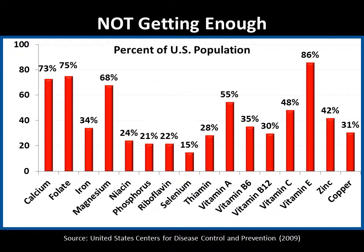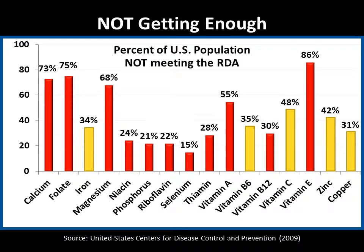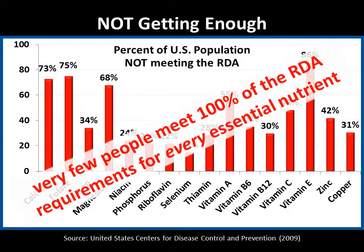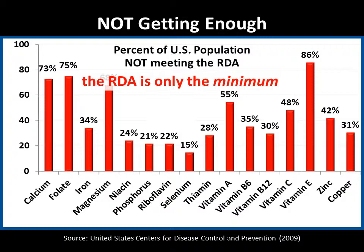This chart shows the percent of the U.S. population not meeting the recommended dietary allowance for 16 essential nutrients. You can see that five of these nutrients are not consumed by over 50% of the population on a daily basis, and another five nutrients are missed by over 30% of the population. Very few people meet 100% of the RDA requirements for every essential nutrient. Remember that the RDA is only the minimum amount required to prevent deficiency disorders — it's certainly not the amount that would optimize your health.